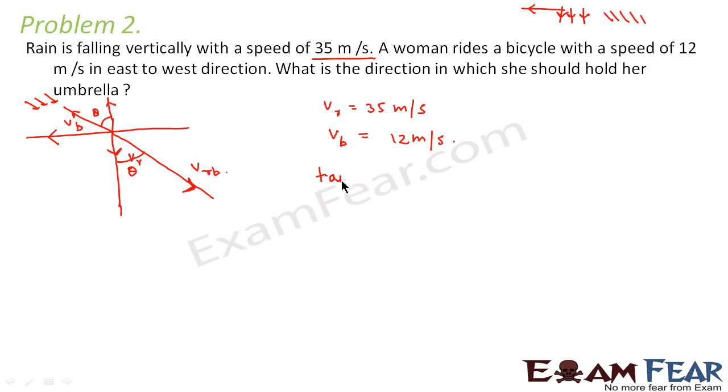So first of all let us calculate tan theta. So what would be tan theta? If you see this figure, tan theta would be equal to perpendicular by base. Now what is base? Base is vr and what is the perpendicular? Perpendicular is nothing but vb. So tan theta would be equal to vb by vr.